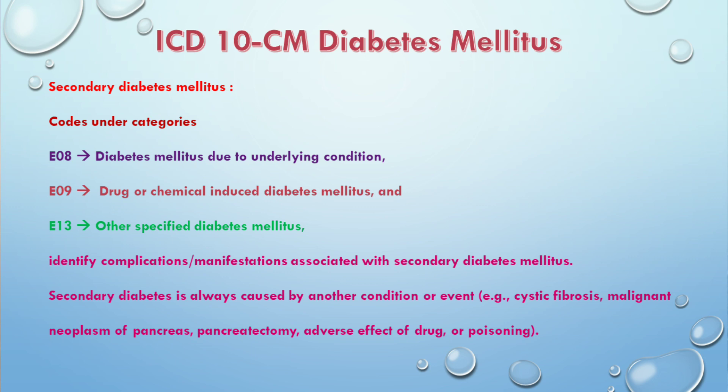E09 is drug or chemical induced diabetes mellitus. There are other types of diabetes mellitus — all representing different reasons a patient may develop diabetes. Secondary diabetes mellitus is always caused by another condition or event, and if it is secondary diabetes, it can cause various complications.